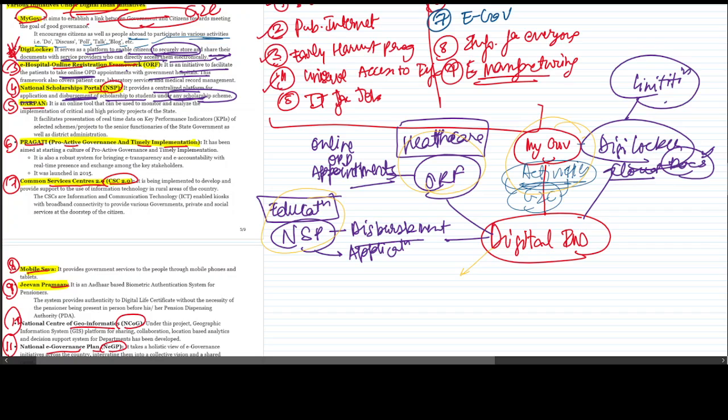Education done, healthcare with ORF done, MyGov done, Digital Locker cloud service done. Next is PRAGATI. PRAGATI scheme is an online tool that can be used to monitor and analyze the implementation of critical and higher priority projects of the state. It facilitates presentation of real-time data on KPIs, selected schemes and projects to senior functionaries of the state government as well as district administration. PRAGATI is for state governments for their projects.